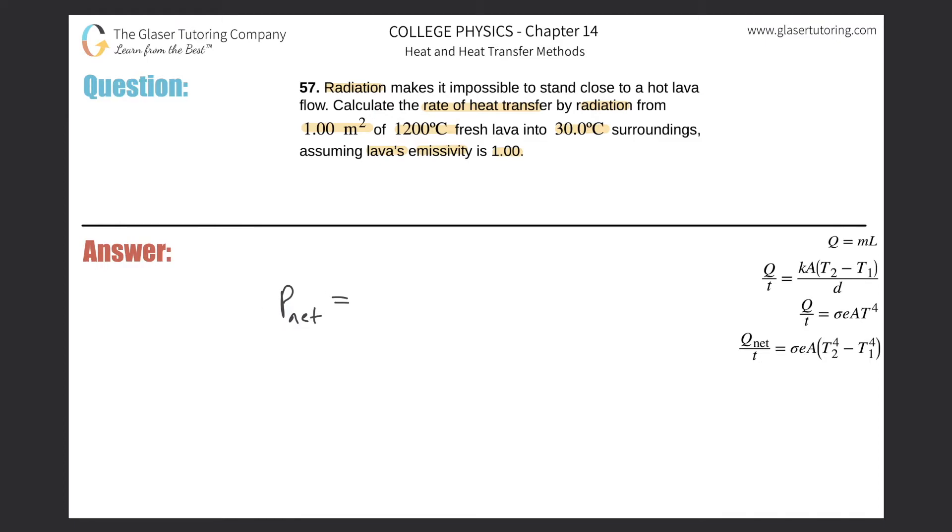This equals the Stefan-Boltzmann constant, which is a value you're going to have to memorize or you might be given, multiplied by the emissivity of the object, multiplied by the area over which radiation is occurring, multiplied by the temperature differential between the two.